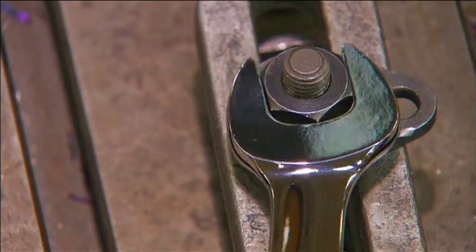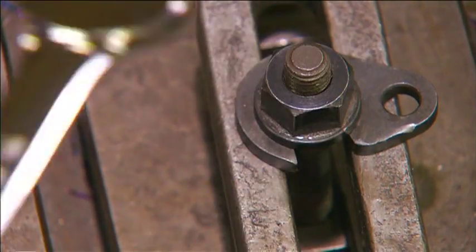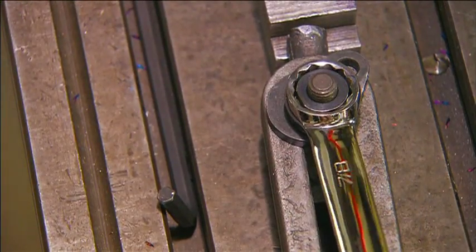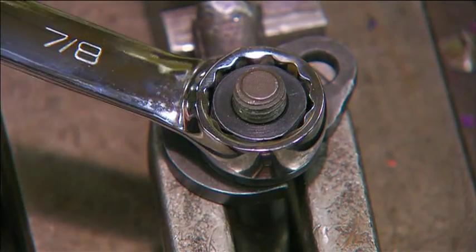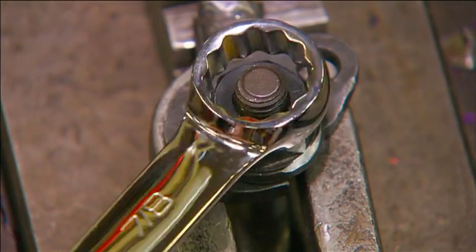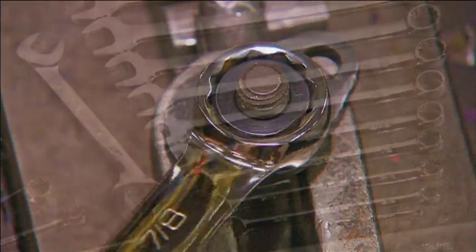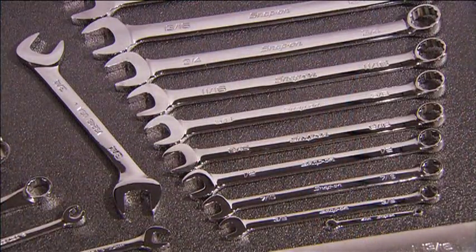A combination wrench tightens and loosens nuts and bolts using its U-shaped open end or its enclosed box end with a hexagonal shape. Combination wrenches come in imperial and metric sizes.